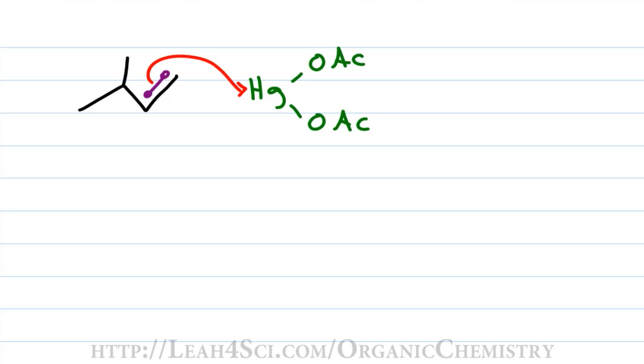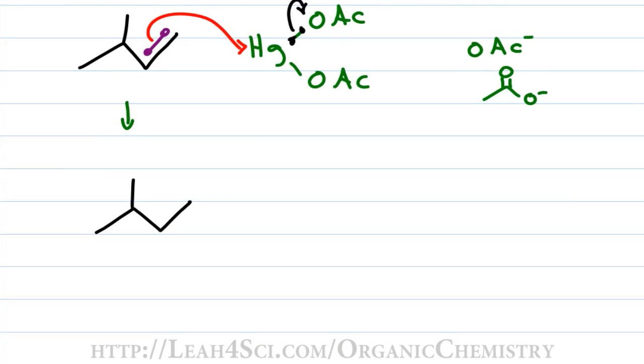Mercury can only have two bonds so we show one of the acetate groups breaking away and dissolving into solution. We show the OAC minus which you can also show as acetate minus in solution. Then we'll show the product of this step where the pi bond is broken and the mercury with just one OAC is bound to the less substituted carbon giving us that fleeting carbocation intermediate on the more substituted carbon in accordance with Markovnikov's rule.